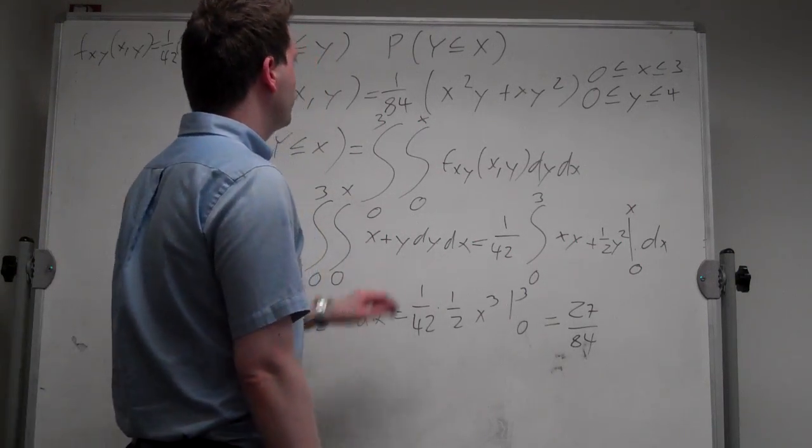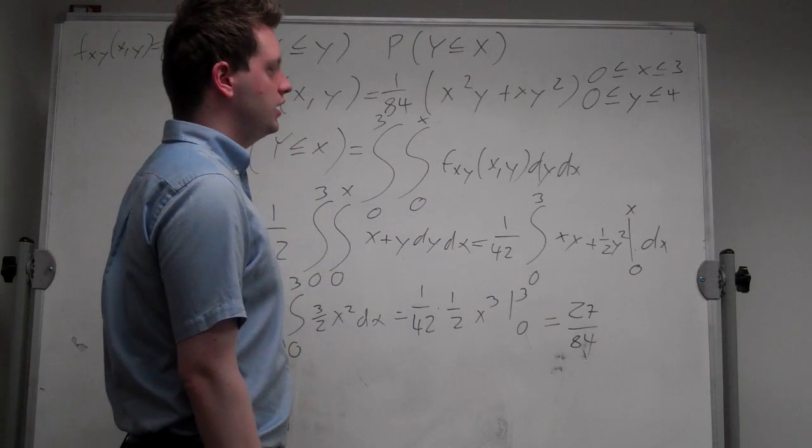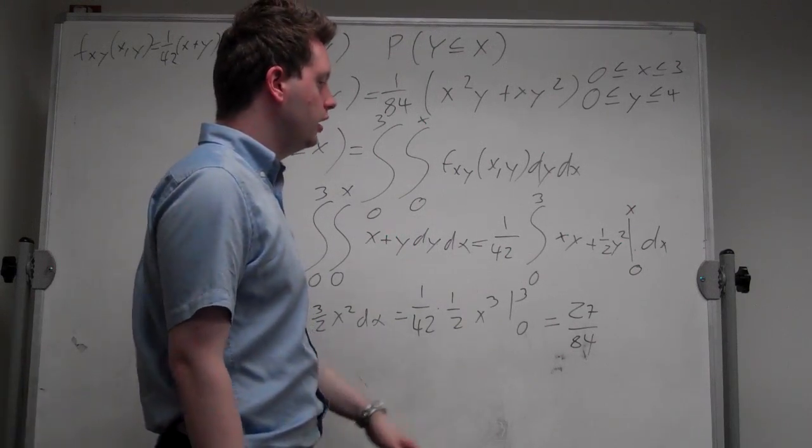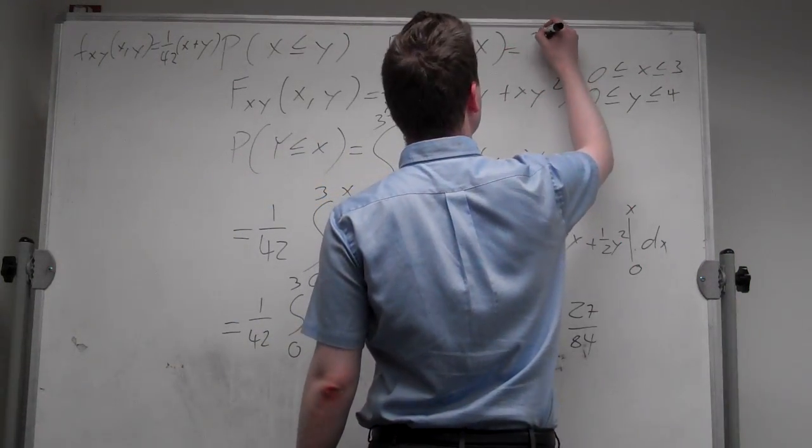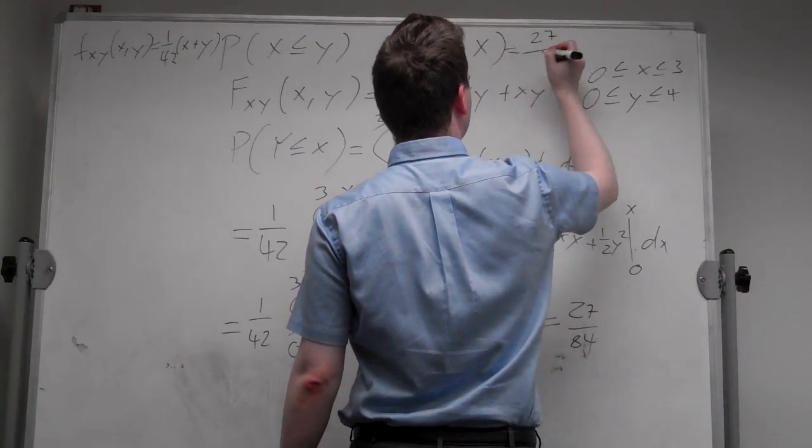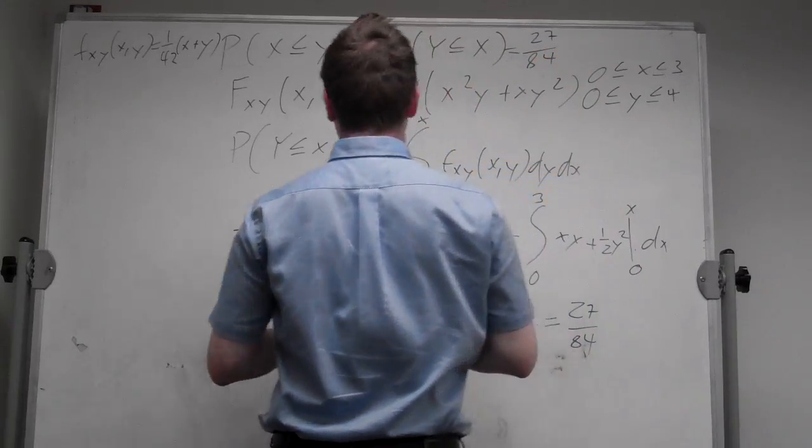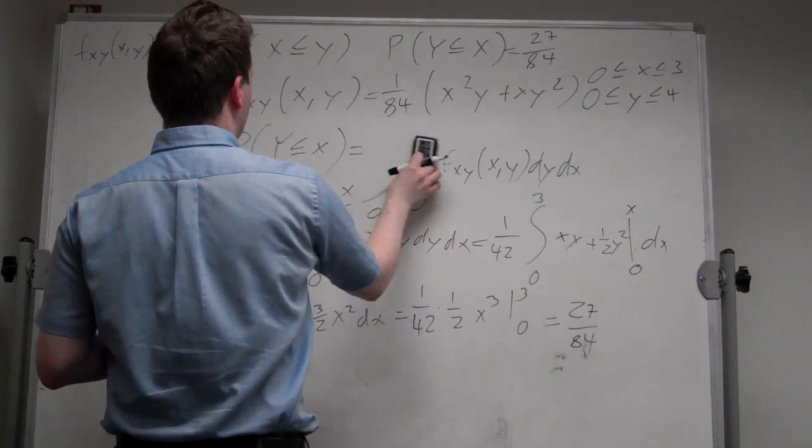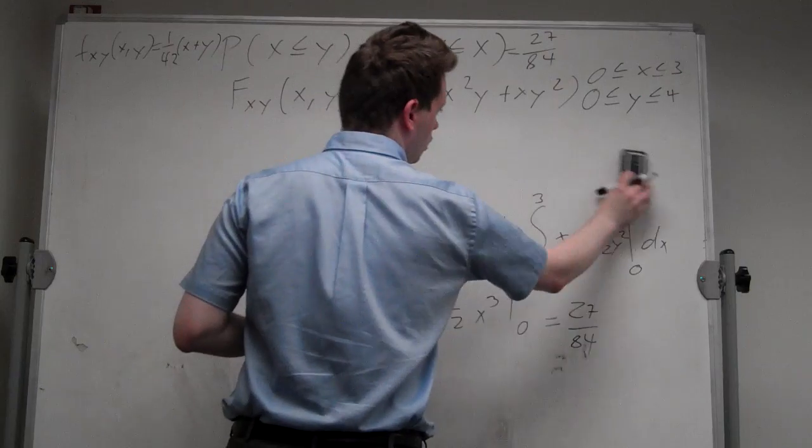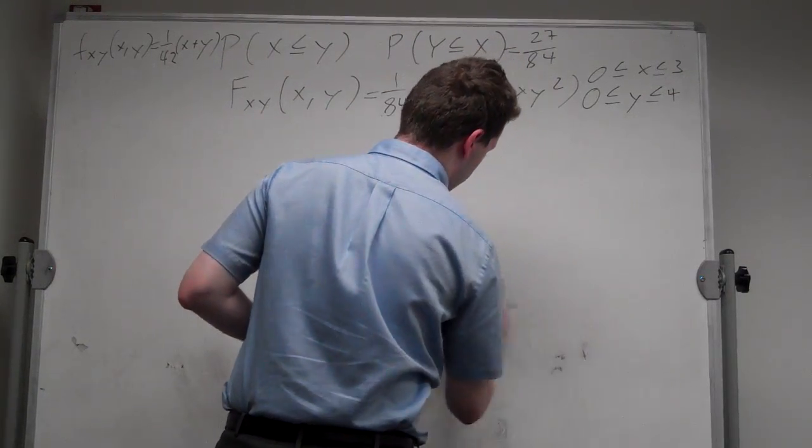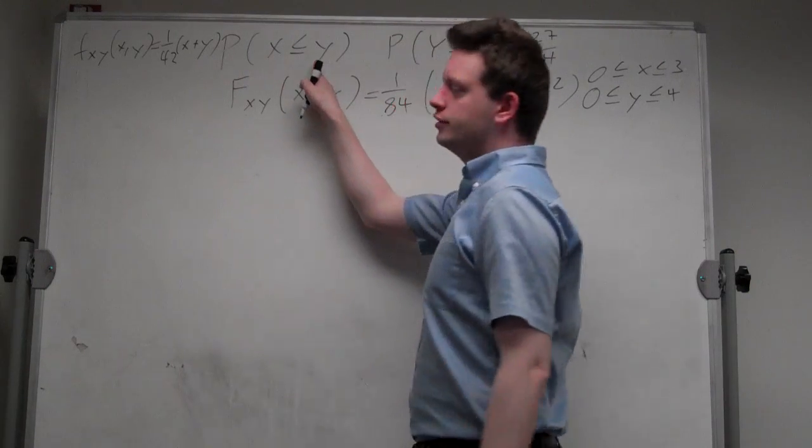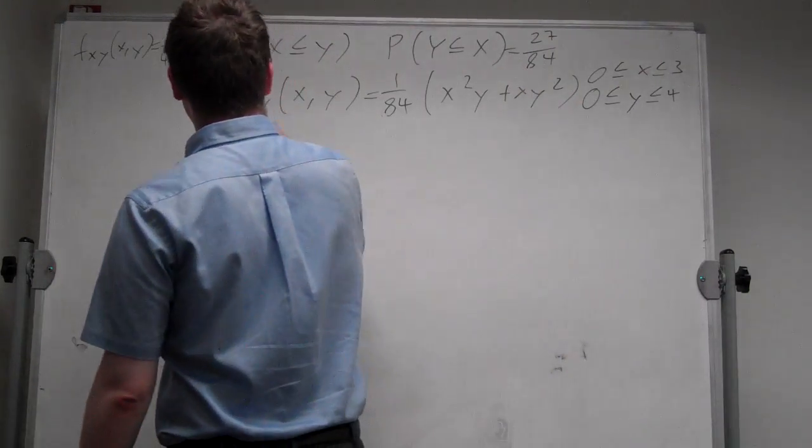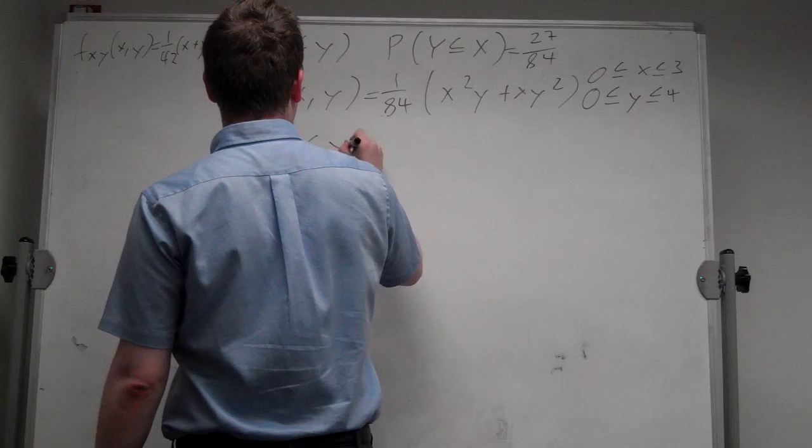How can we find now this probability that x is less than or equal to y? Well, let me first put this up here, so we got this probability is 27 over 84, and we can erase everything that we don't need anymore.